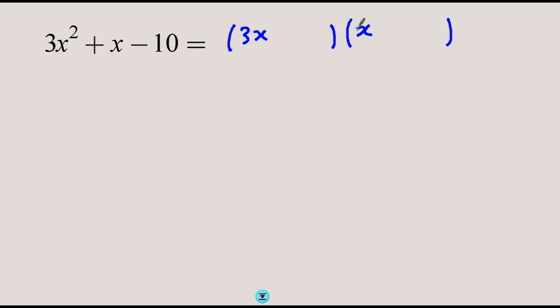I would think of the factors of 10. What if 10 was here and 1 was here? You'd have 10x and 3x—is there a way from 10x and 3x you can get x? No, no matter what the signs are. What if 1 was here and 10 was here? You'd have 30x and x—there is no way.